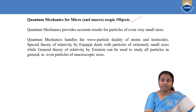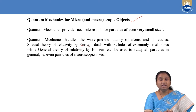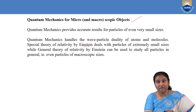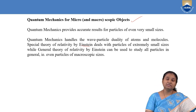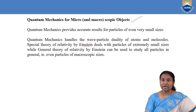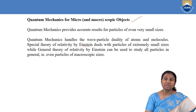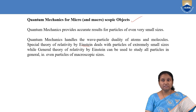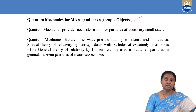A main role in quantum mechanics was played by scientist Einstein. The special theory of relativity given by Einstein deals with particles of very small sizes, whereas the general theory of relativity studies particles in general, including those in the macroscopic range. So classical mechanics is applicable only for macroscopic huge bodies, whereas quantum mechanics explains the behavior of small particles, atoms or molecules using dual characteristic properties.